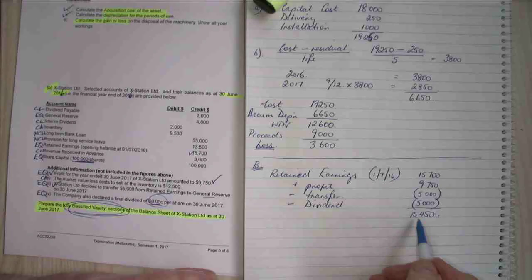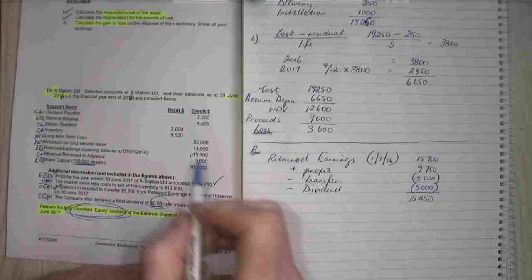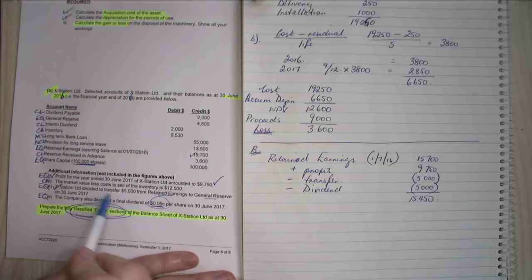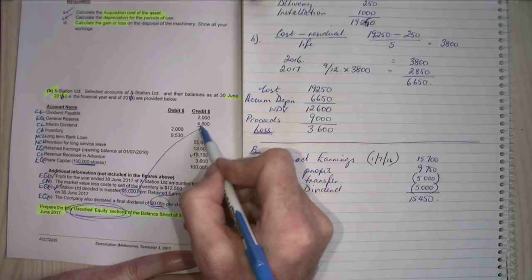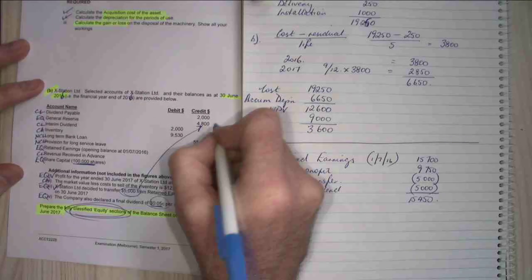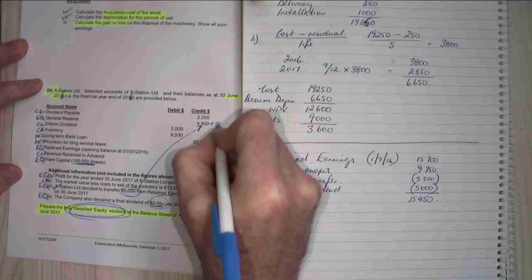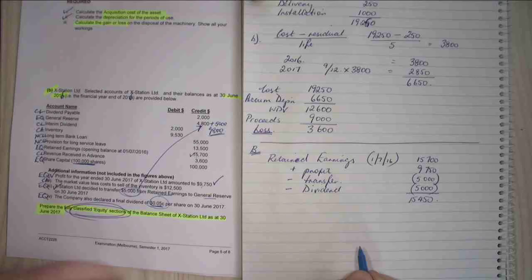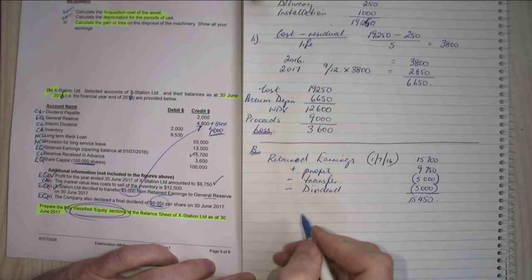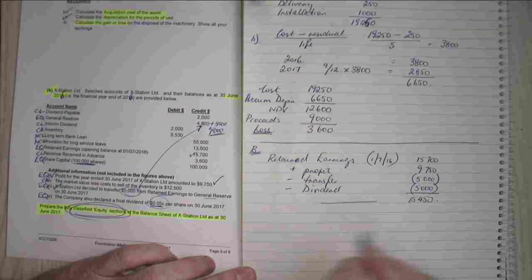So that becomes my retained earnings balance. Now there was one other change which was this $5,000 transfer to general reserves. So that's got to affect that figure up there, which is transfer to general reserves. So I'm going to have plus $5,000 more there which will give me $9,800. Okay, so let's now, so now that I've got that bit done.